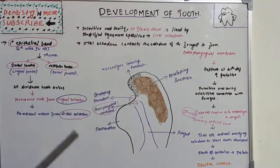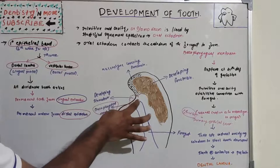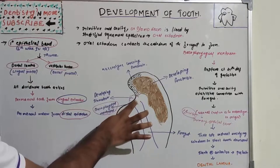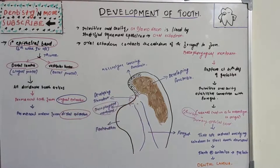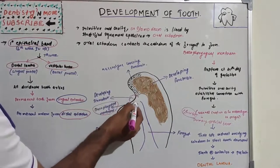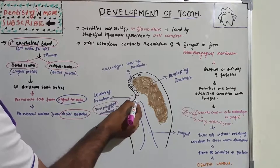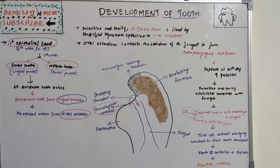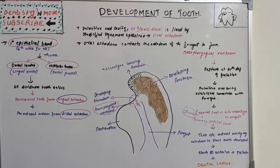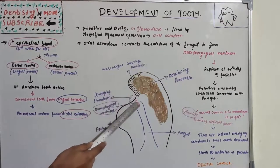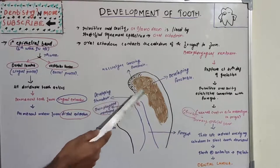The buccopharyngeal membrane ruptures around the fourth week — specifically the 27th day of gestation. Once it ruptures, a connection is established between the primitive oral cavity and the foregut. So at 27 days, this connection between the oral cavity and foregut is formed.